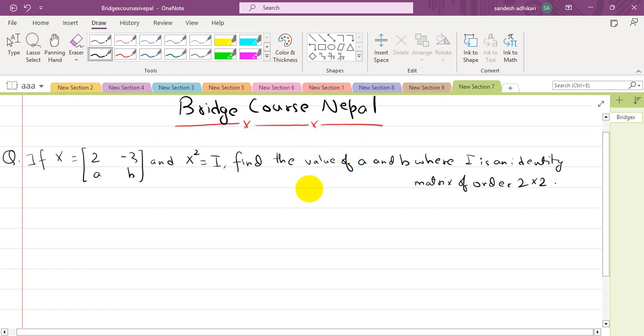Hello and namaste everyone, welcome to Bridge Course Nepal. We're going to solve a matrix question. If x equals [2, -3; a, b] and x² equals I, find the value of a and b where I is an identity matrix of order 2×2.